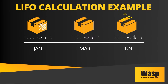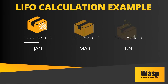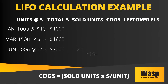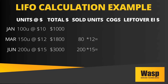By year-end, WidgetCo sold 280 units. Using the LIFO method for inventory costing, we calculate the cost of goods sold starting with the most recent purchases. From June: 200 units sold at $15. From March: 80 units sold at $12. So the total cost of sales is $3,000 plus $960, equals $3,960.